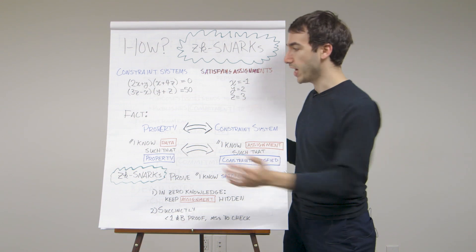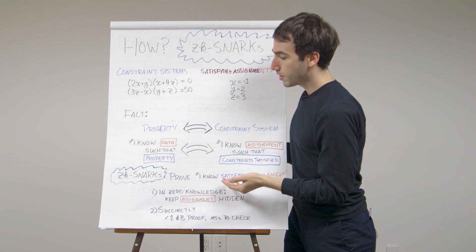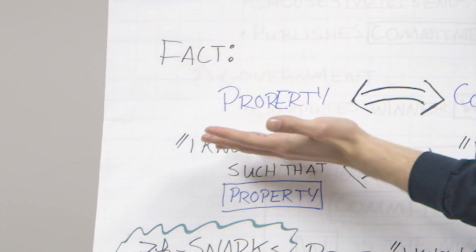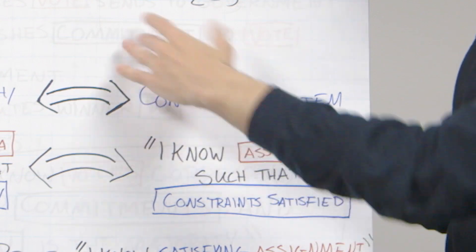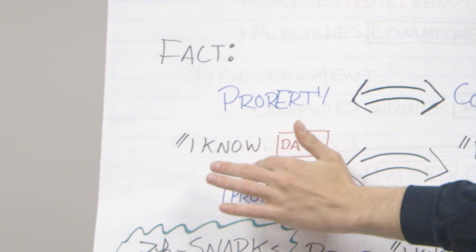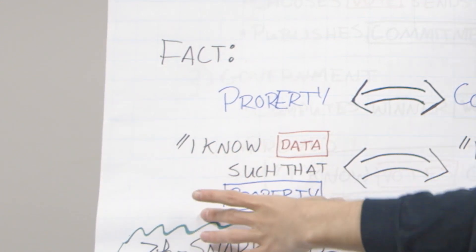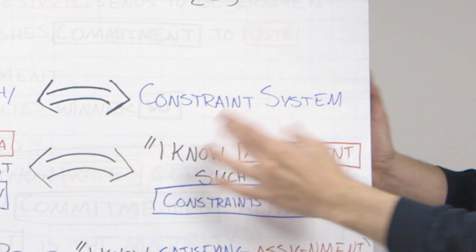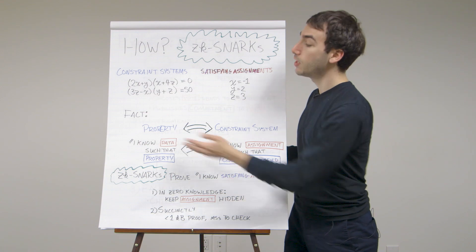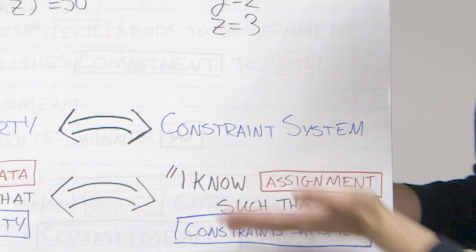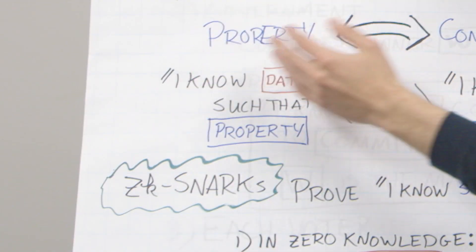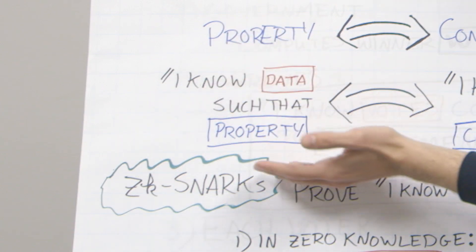There's a wonderful fact about constraint systems: they're universal. Any property that you might have in mind can be translated into a constraint system, so that proving you know some data such that the property holds is the same as proving you know an assignment so that the constraint system is satisfied. That's the sense in which they're universal.